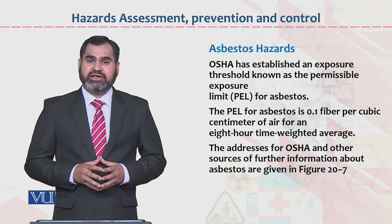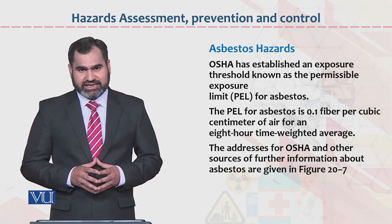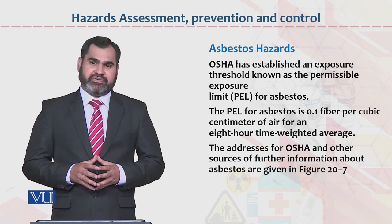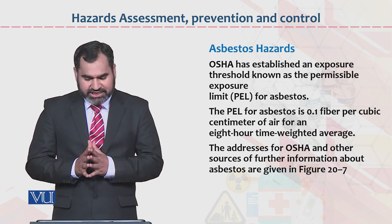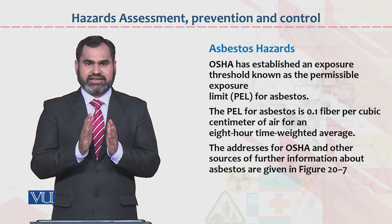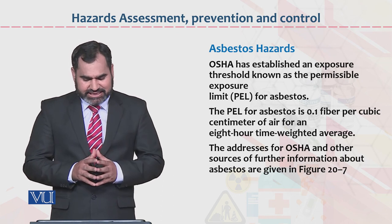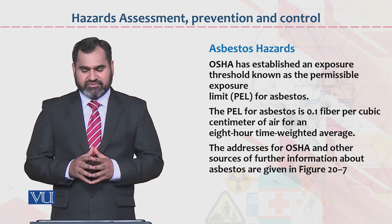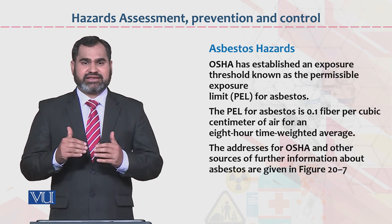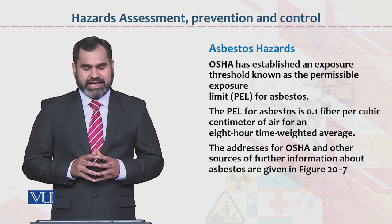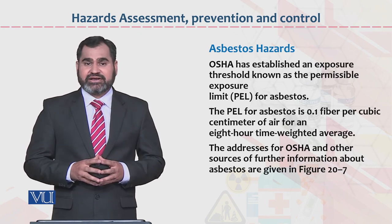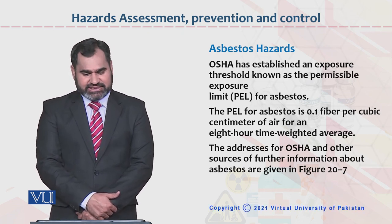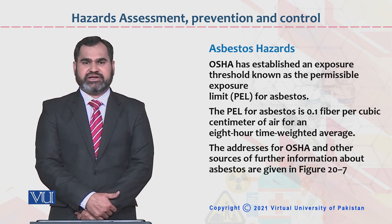Asbestos hazards ko agar dekha jaye, Occupational Safety and Health Association ke hawale se, toh yeh basically established an exposure threshold known as the permissible exposure limit. Yeh jo permissible exposure hai — is mein bataya gaya hai ke hawa ke andar, per cubic centimeter of air for an 8-hour time-weighted average, woh 0.1 fiber hai. Asbestos ka 0.1 fiber per cubic centimeter — agar isse zyada ya kam ho, woh hamare liye problematic hai. In cheezon ko judge karne ke liye OSHA se guideline required hai. Agar aap un ko follow karein, toh kaafi haad tak hazards assessment, prevention and control ko manage karne mein kamyaab ho jayenge.